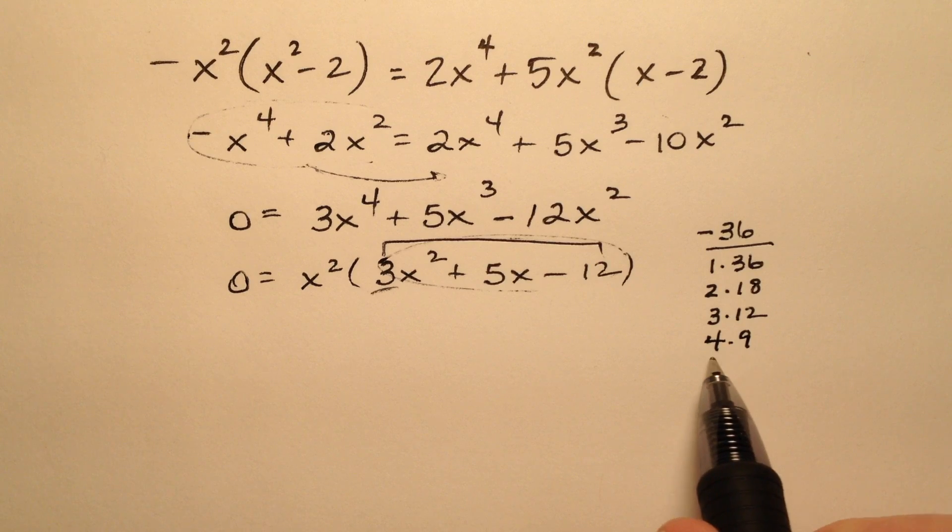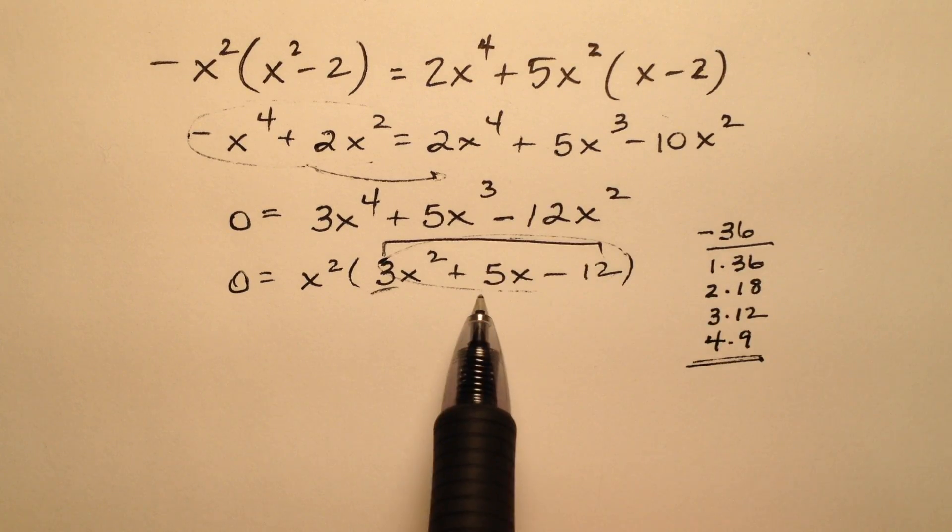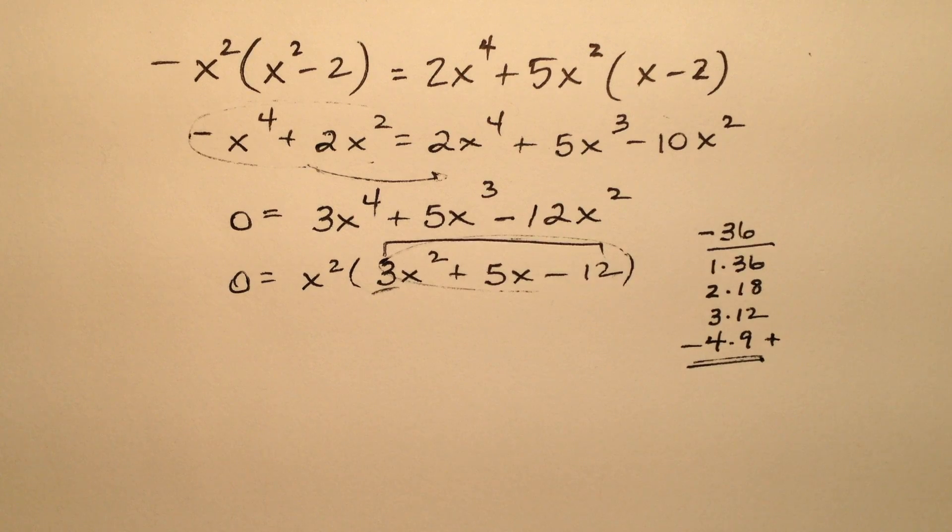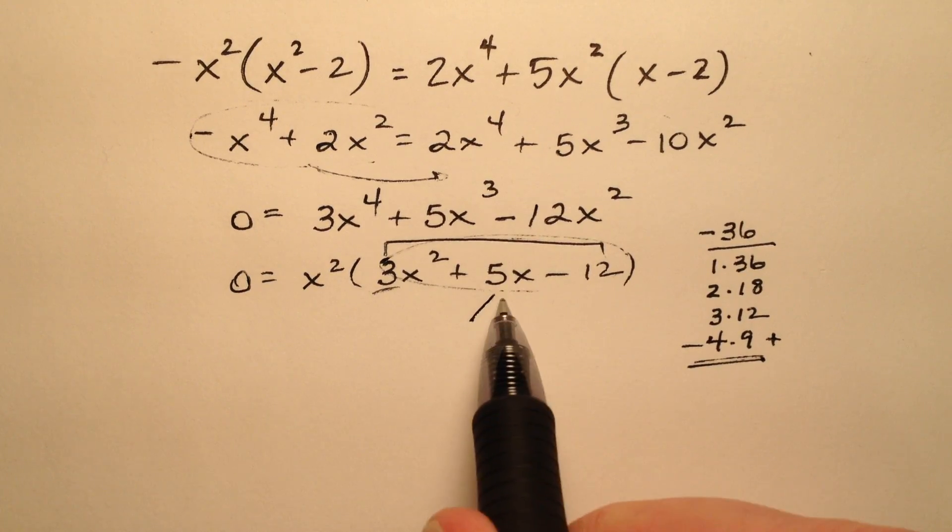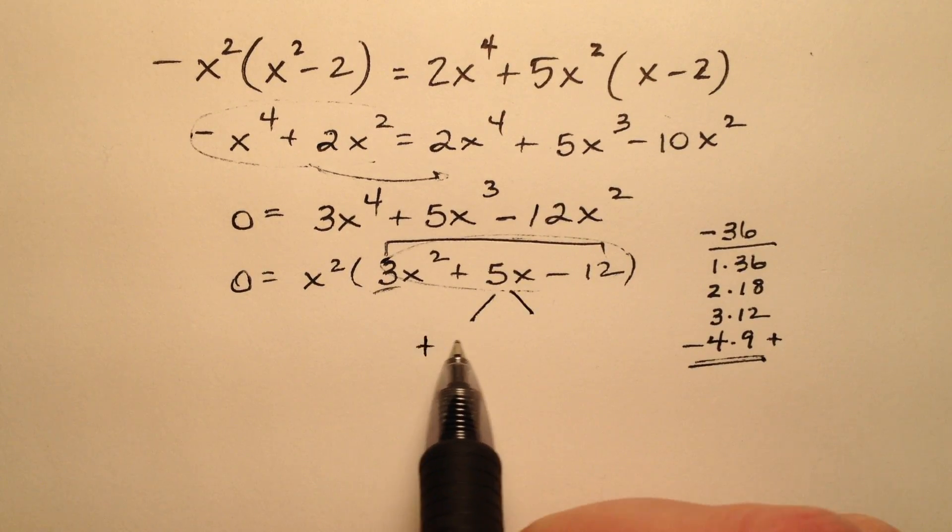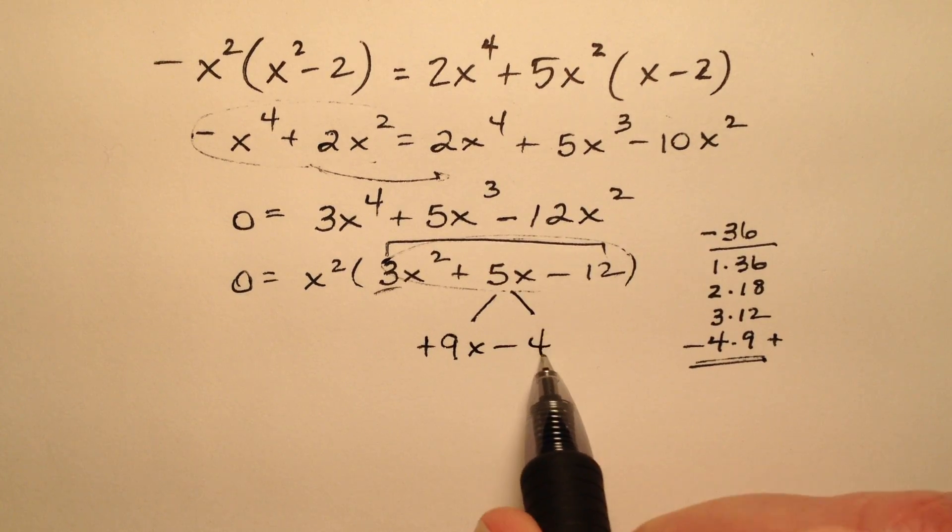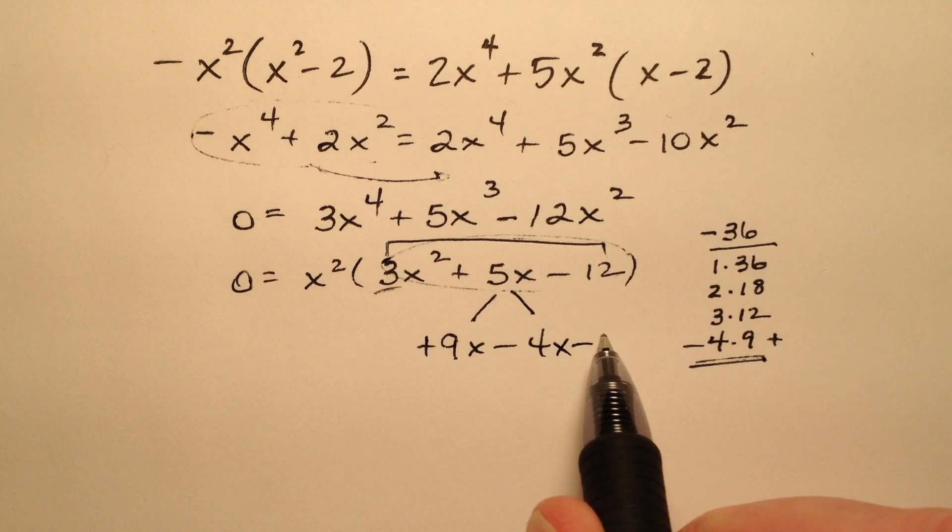It looks like it'll be my 4 and my 9, where the larger one will be positive and the other negative. Let's rewrite this, and I'm going to take that linear term and break it up into these two terms with my 9x and my minus 4x.